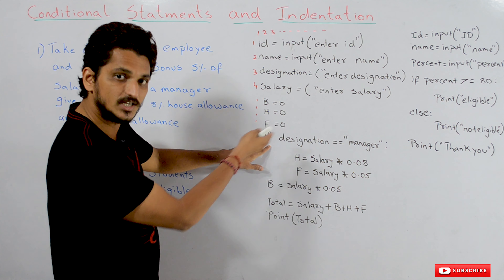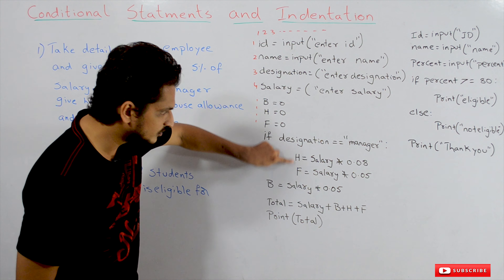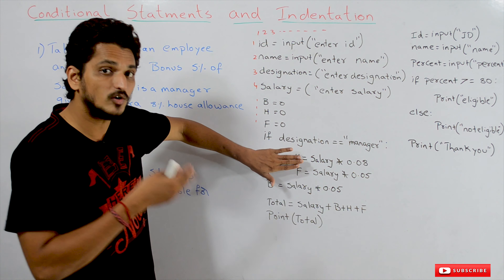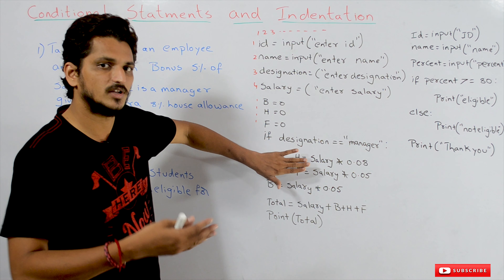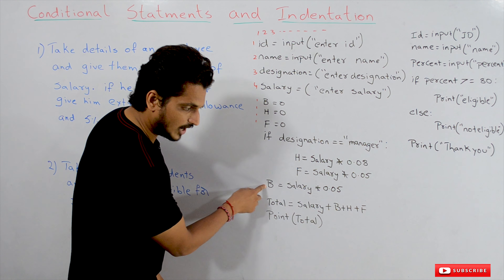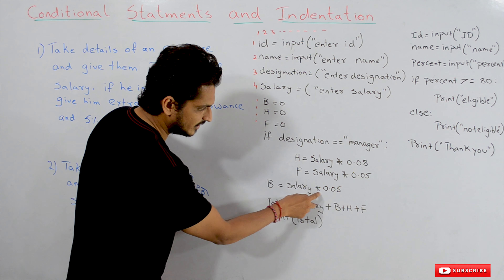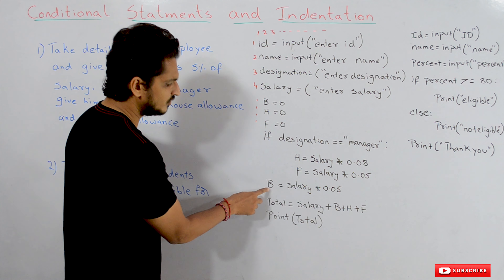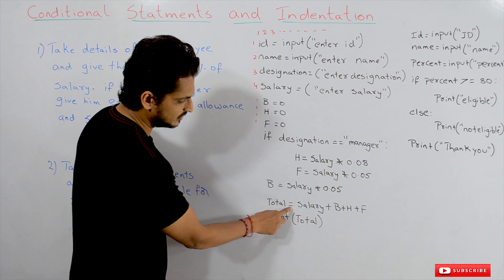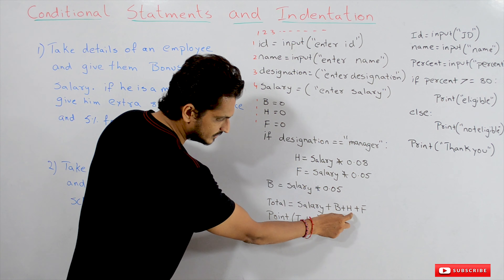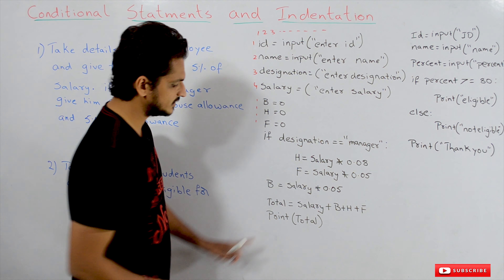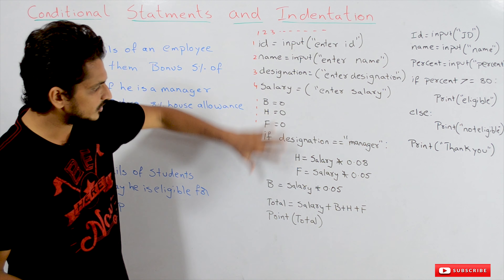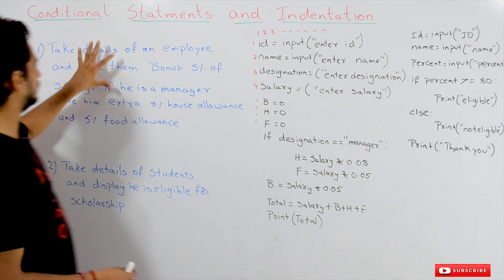That is very important to understand — this block of code and why we are stressing here is that you have to understand the concept of indentation. After the if block, we continue executing: B = salary * 0.05, meaning 5% of the salary is calculated and assigned to B. Total salary = salary + bonus + house allowances + food allowances, and then we display the total salary. This is the logic for implementing this question.